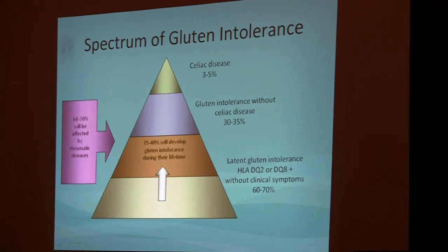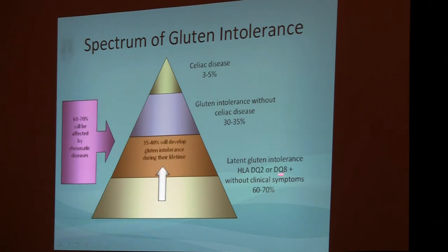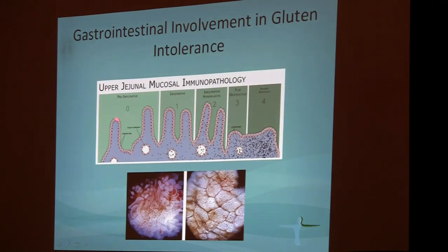There are many misunderstandings about what celiac disease is and how it differs from gluten intolerance. Celiac disease is a form of gluten intolerance — an extreme form. Only three to five percent of patients with actual gluten intolerance will develop celiac disease. In general, 60 to 70 percent of all people who carry these genes will be more or less asymptomatic during their lifespan, and approximately 30 to 35 percent will develop full-blown gluten intolerance without celiac disease. To be diagnosed with celiac disease, you need an intestinal biopsy — you cannot have the diagnosis without one. Most patients with gluten intolerance without celiac disease fall into grade zero or one on the intestinal damage scale.